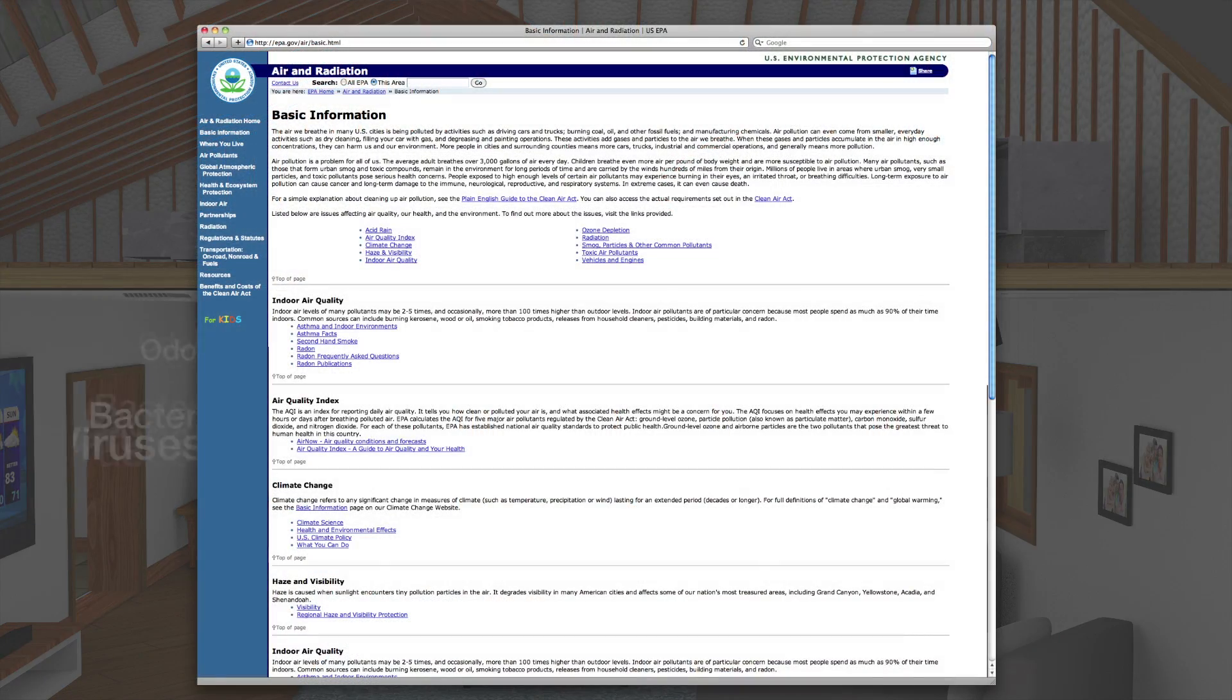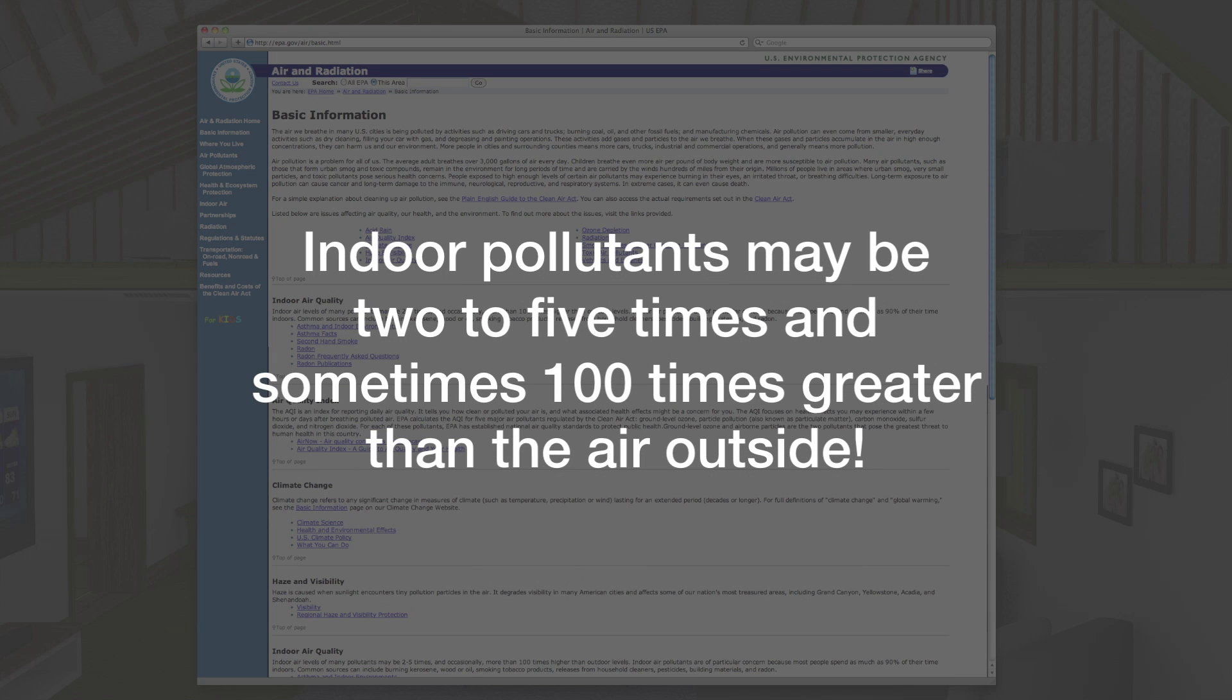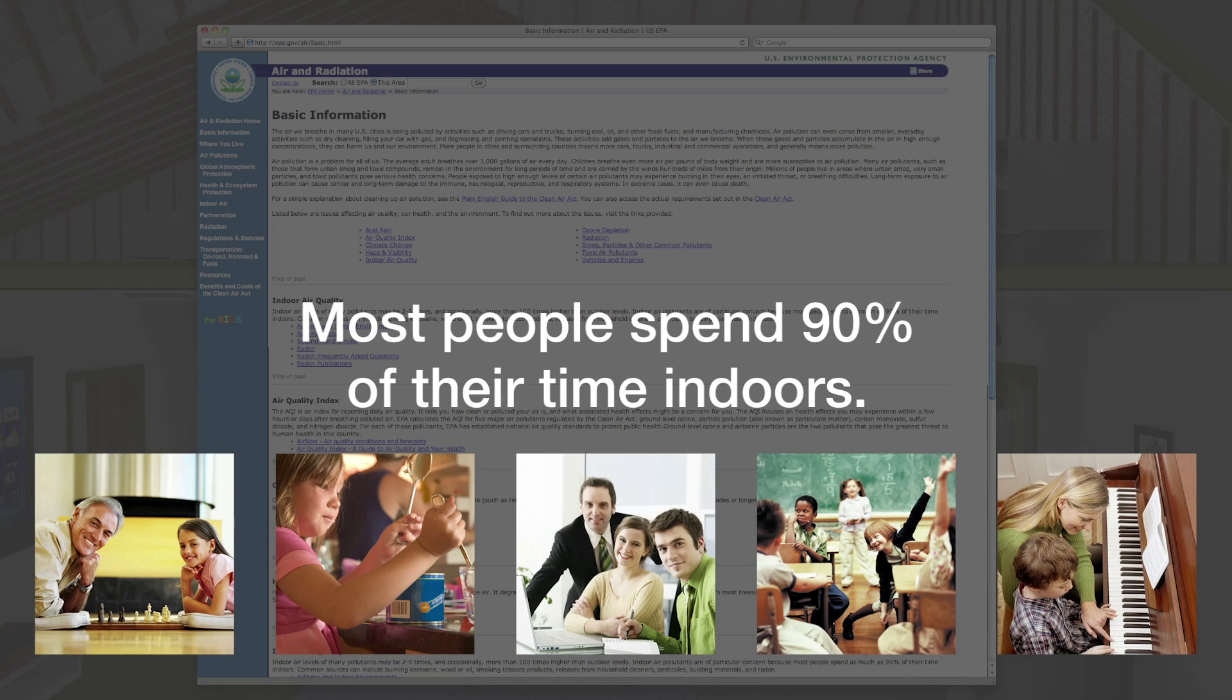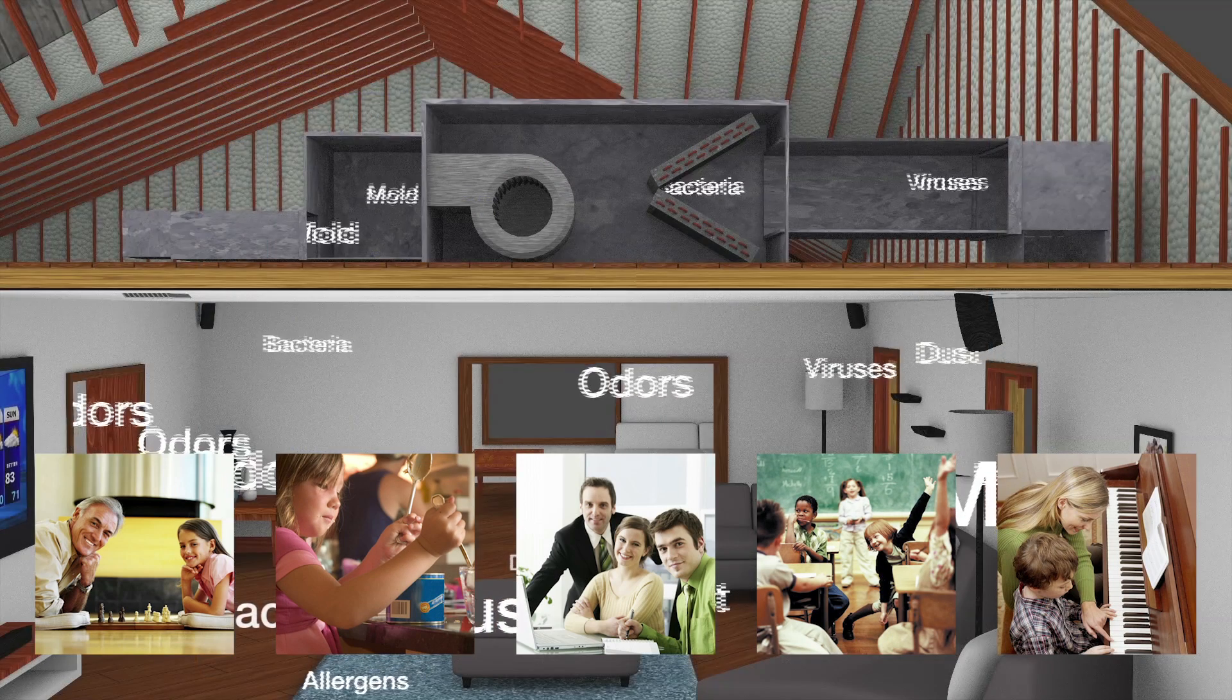According to the EPA, indoor air levels of many pollutants may be two to five times and occasionally more than 100 times higher than outdoor levels. And high levels of indoor air pollution are a particular concern because most people spend as much as 90 percent of their time indoors.